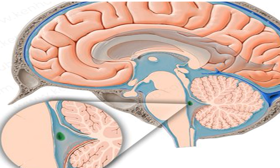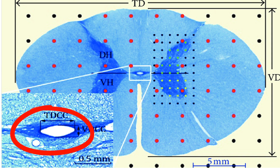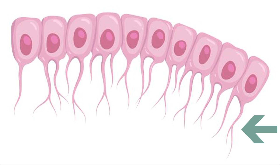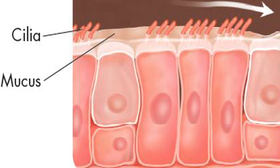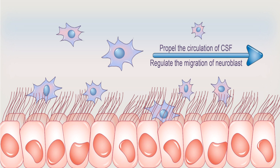Ependymal cells line the cavities of the brain and the central canal of the spinal cord. These cells have cilia that are often motile. Cilia are short microscopic hair-like structures — similar to cilia in the respiratory system that move microbes and debris up and out of the airways. Here, the cilia of ependymal cells contribute to the movement of cerebrospinal fluid, circulating it throughout the ventricles of the brain and the central canal of the spinal cord — that is, all over the cavities of the CNS.